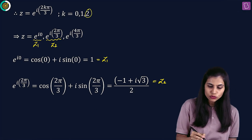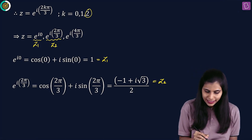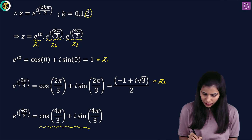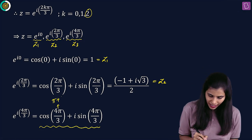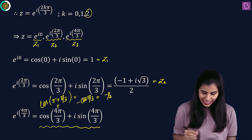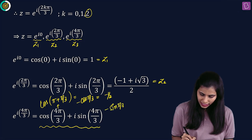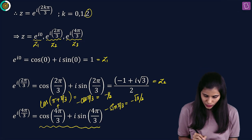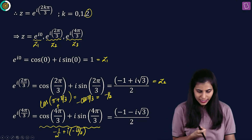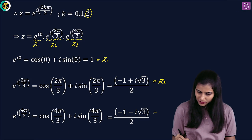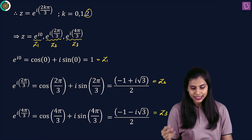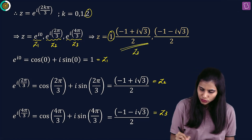When I plug in k equals 2, I get e to the power iota into 4 pi by 3, call it z3. Expanding using Euler form gives cos 4 pi by 3 plus iota sin 4 pi by 3. Writing 4 pi by 3 as pi plus pi by 3: cos gives minus cos pi by 3, which is minus 1 by 2, and sin gives minus sin pi by 3, which is minus root 3 by 2. So z3 comes out to be minus 1 minus root 3 iota, whole divided by 2.